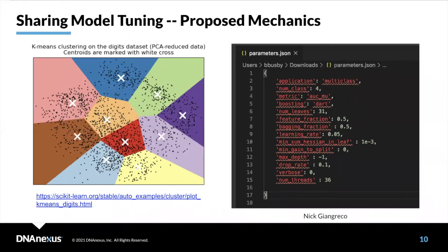What do we really do as data scientists? We want to break things into clusters, because most diseases have multiple etiologies. Then we want to tune our models and hyperparameters to work for those clusters. Let me give you an example of how that works.